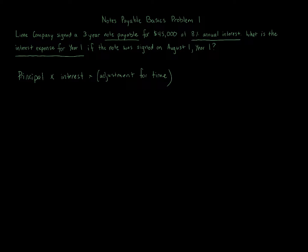The principle here: lime company signed a three-year note payable for forty-five thousand dollars, so the principle amount is forty-five thousand dollars. Nothing in the problem says the principle is paid down in installments. The question is asking for interest expense for year one, and August 1st is when this note was actually taken on by lime company.